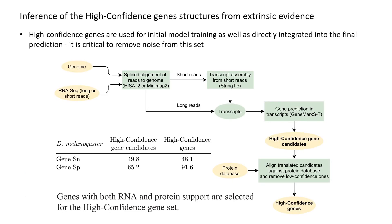I have mentioned high-confidence genes several times. To reiterate, these genes are used for splitting the genome into fragments and for the estimation of initial model parameters. Furthermore, they are also integrated into the final gene prediction set. For all these reasons, these genes must represent correct gene structures with as few deviations as possible.